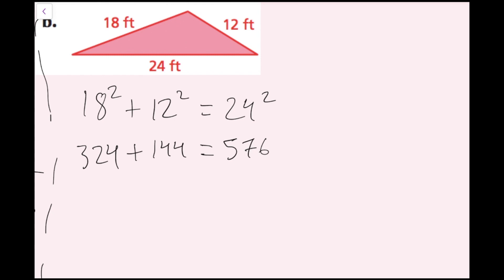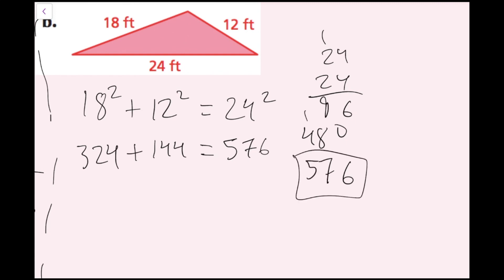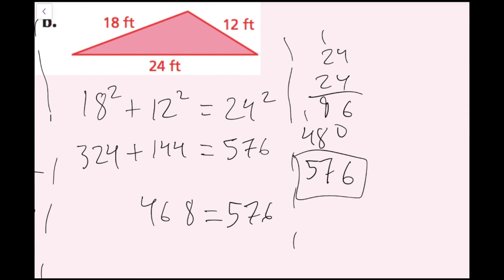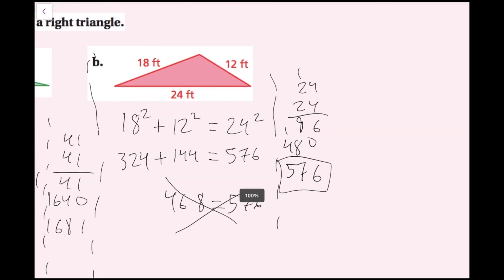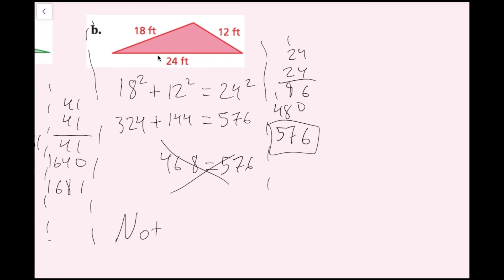I'll verify 24 squared: 24 times 24 equals 576. Now I check: 144 plus 324. Adding those together I get 468. So this is saying 468 equals 576 — that is simply not true. So I'm going to reject this, and I know that this triangle is not a right triangle.